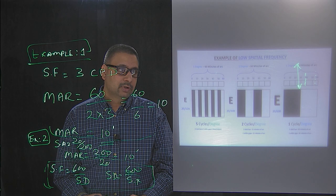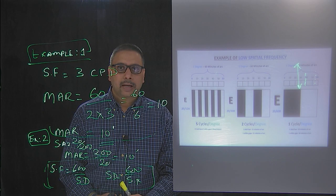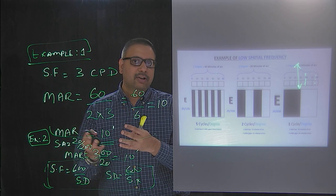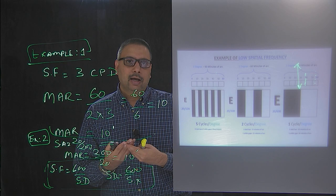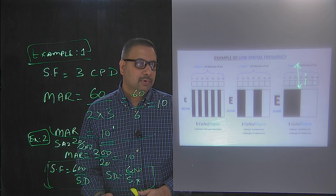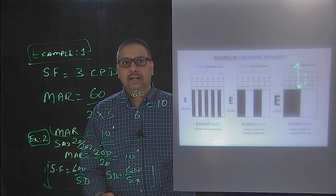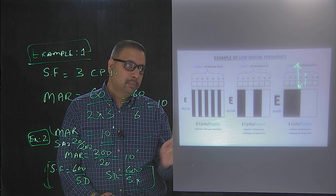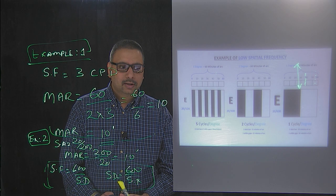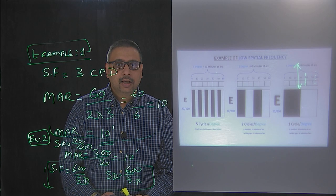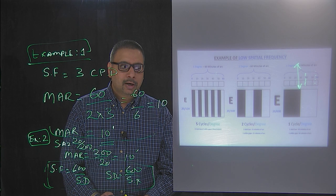If it is 2 cycles per degree, you have 2 black bars and 2 white bars fit into one degree. Each spatial frequency cycle consists of 1 black bar and 1 white bar. So 3 cycles per degree means 3 black bars and 3 white bars — 6 total bars fit into 60 minutes. For 1 cycle per degree, the size of each black or white bar is approximately 30 minutes of arc. For 5 cycles per degree, the width of each bar is really tiny.